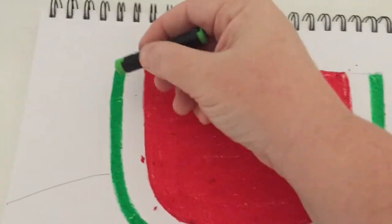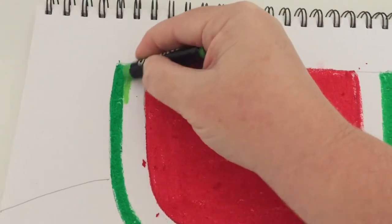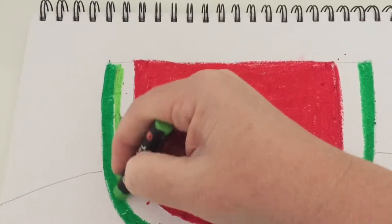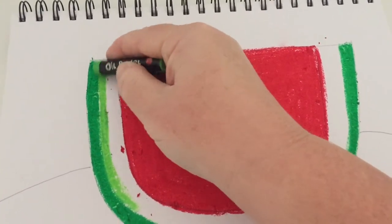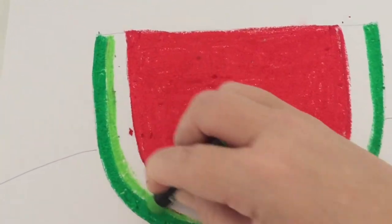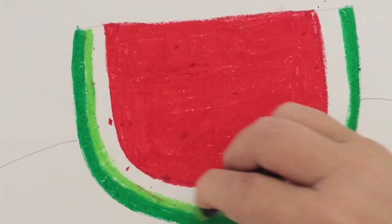Then I'm going to use the light green and continue along there, blending those colours together. Of course we know that green is one of our cool colours and that makes a nice contrast against the warmth of the red.